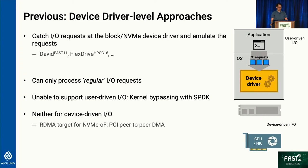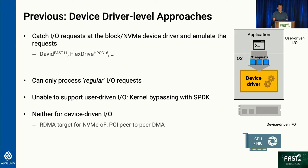Many emulators are implemented as a device driver in the operating system, showing a virtual device to applications by catching IO requests and processing them. This approach has an inherent limitation because of its location in the system. Emulation takes place in the OS, so it can only process operations coming down through the IO stack. It cannot support user-driven IO — many applications nowadays try to access storage directly without going through the kernel IO stack. When the emulator is implemented at the device driver level, this IO model cannot be supported.